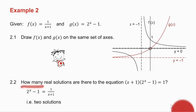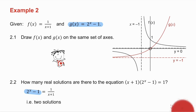Question 2.2 asks how many real solutions there are to the equation — they haven't asked you to solve for x, just how many solutions exist. If I take the x plus 1 across and divide, I get 2 to the x minus 1 equals 1 over x plus 1. That means the exponential graph equals the hyperbola graph. So I'm asking how many times do they cut each other? Looking at the picture, they cut twice. So there are two solutions.